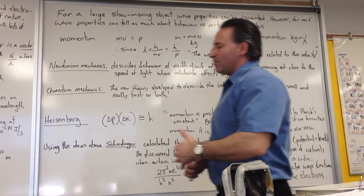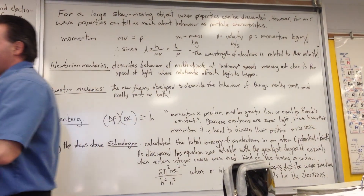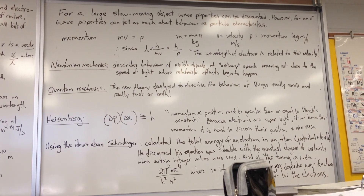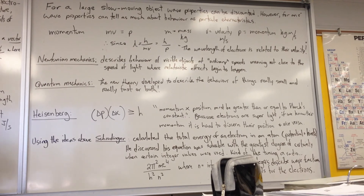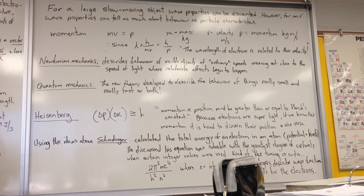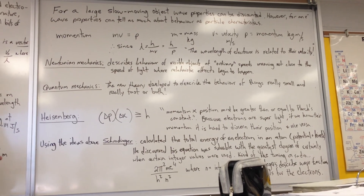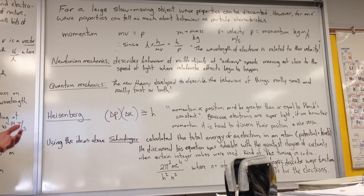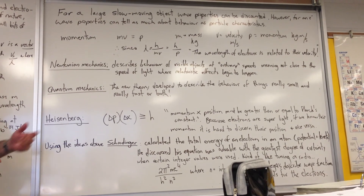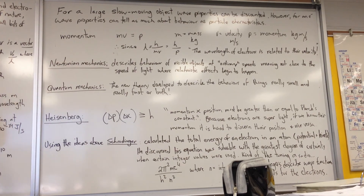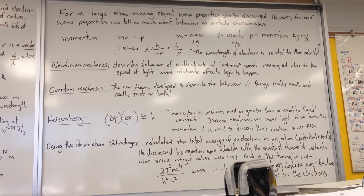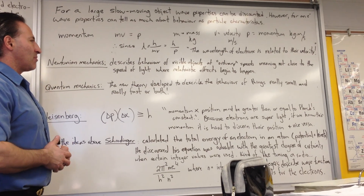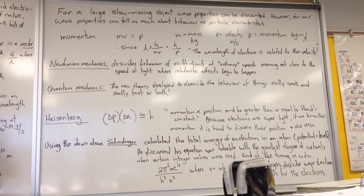Newtonian mechanics was used up to the 19th century to describe physics — it's fine for describing the behavior of visible objects at ordinary speeds, meaning speeds not close to the speed of light where relativistic effects appear. But when we start dealing with electrons, which are very light and move very rapidly near the atom, Newtonian mechanics breaks down and is not sufficient to describe what's happening. So a new theory called quantum mechanics was developed to describe things that are very small and move very fast.